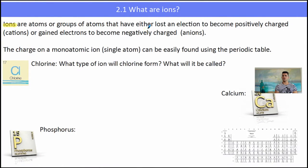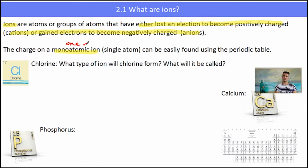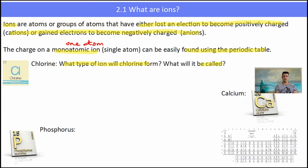We can use that information to work out how the ions will behave. They will either lose an electron or they will gain an electron. Atoms that lose an electron are called cations; atoms that gain electrons are called anions. We need to work out the charge on what we call monoatomic ions, which are one atom, using the periodic table.